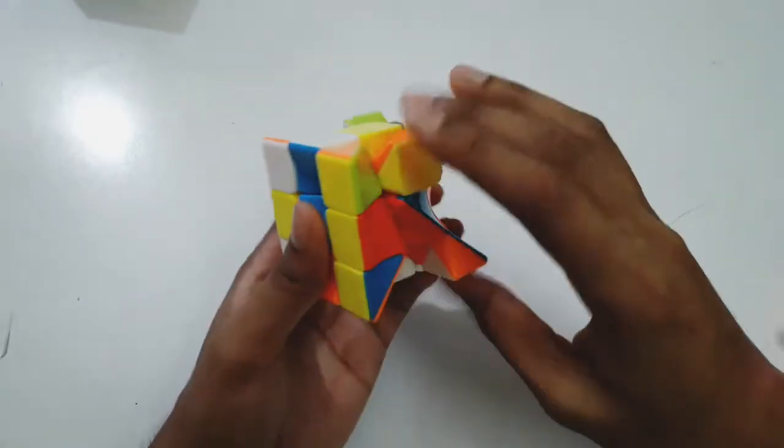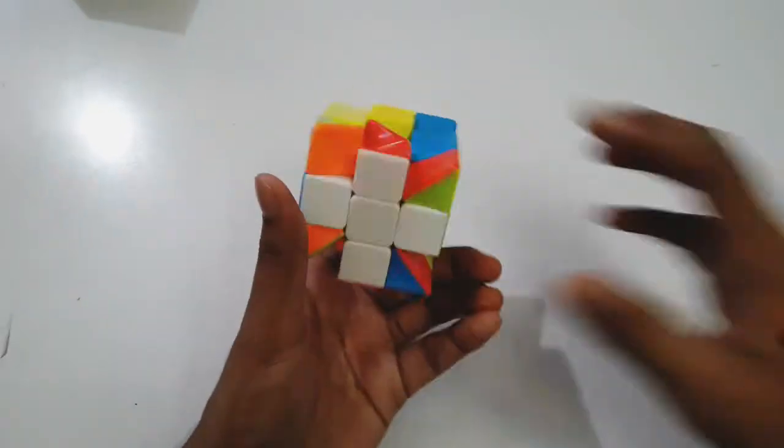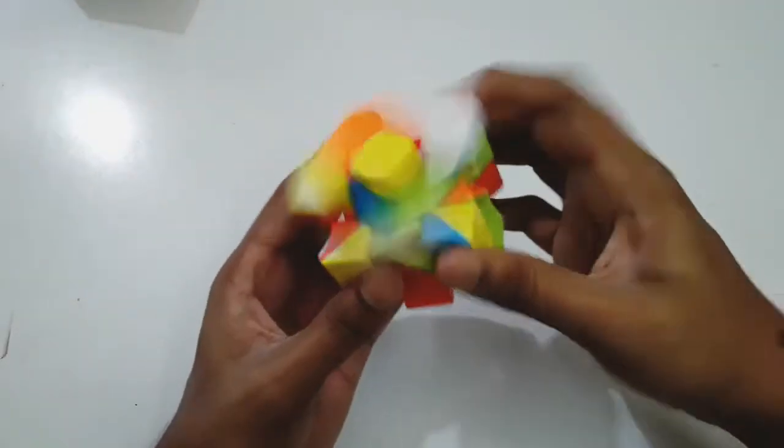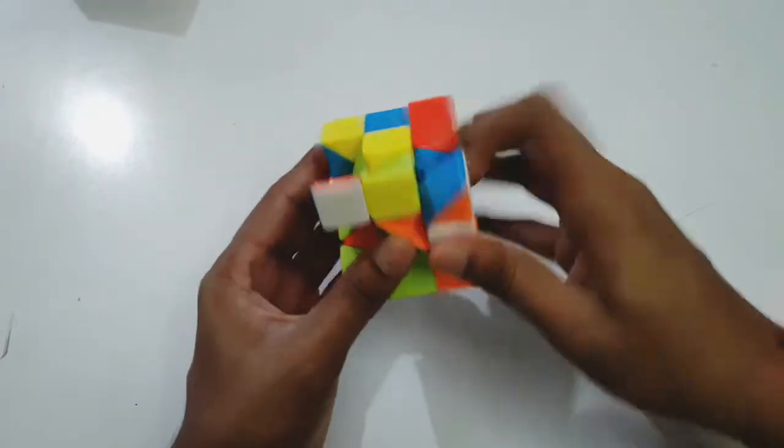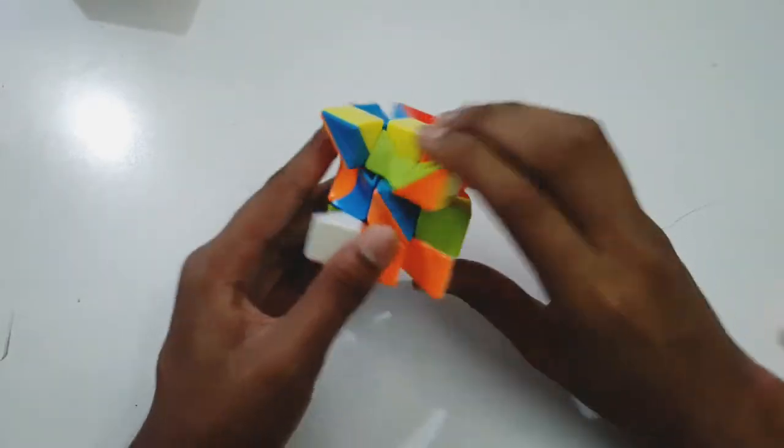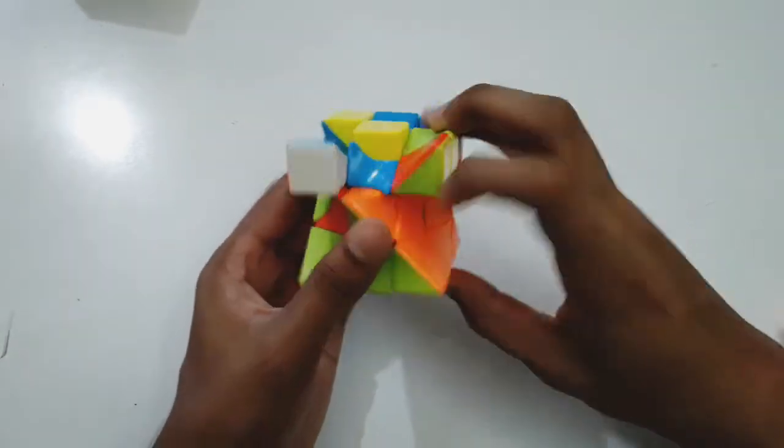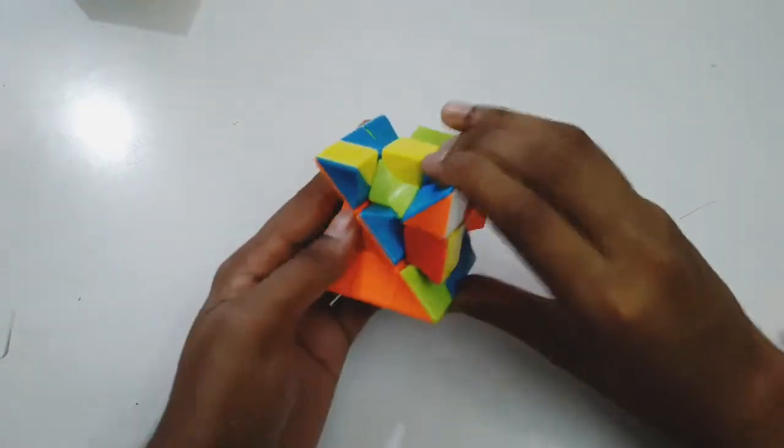Now we are making centers, almost done. Wait, I think this is okay for centers. Then we are using the beginner method. We just find the loop. I think this is the first layer. We've done the first layer.